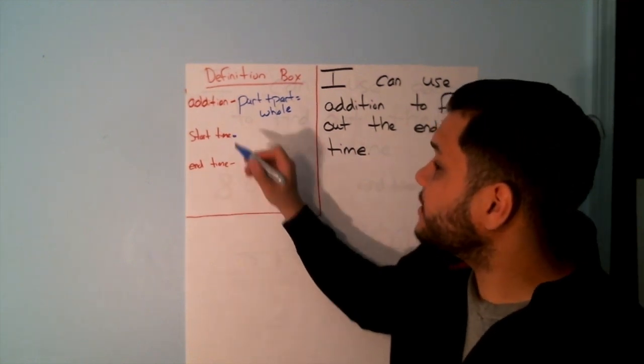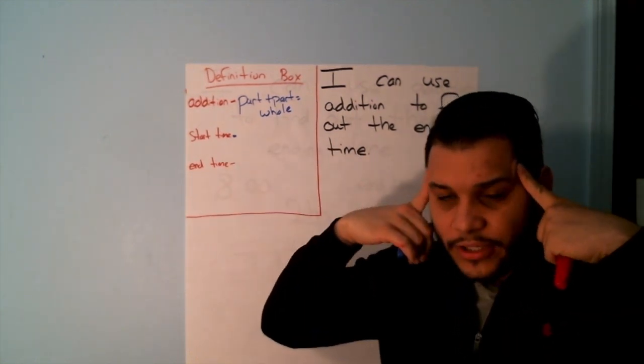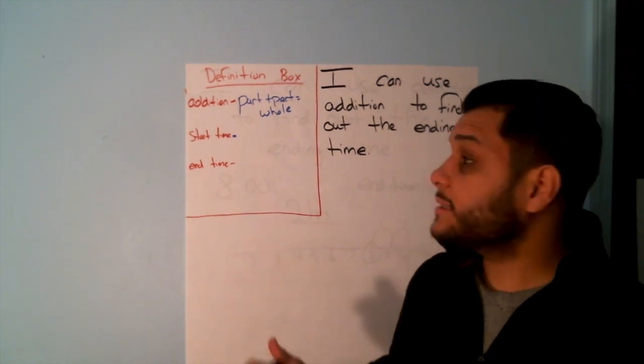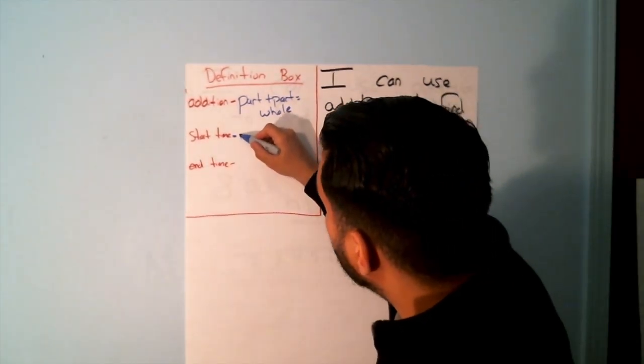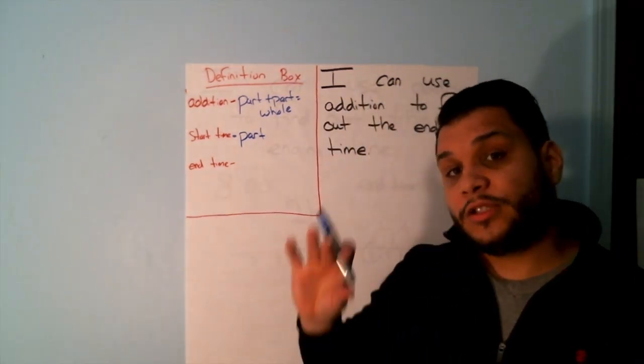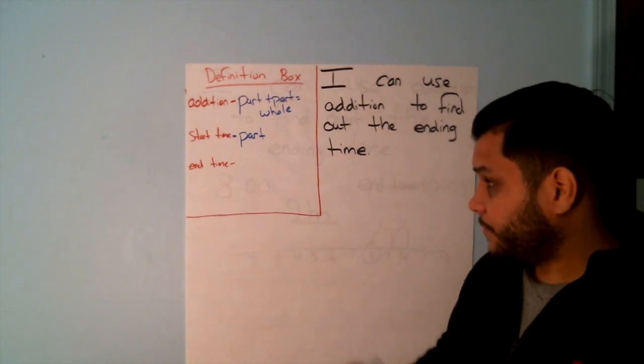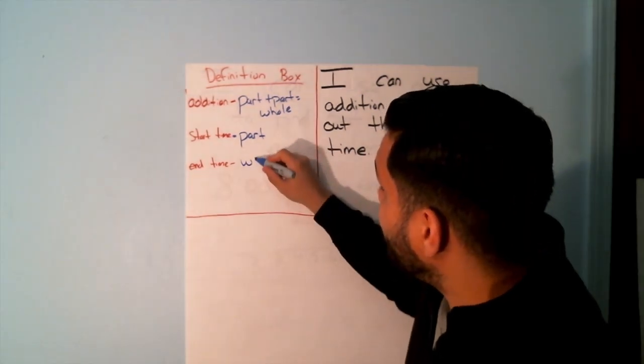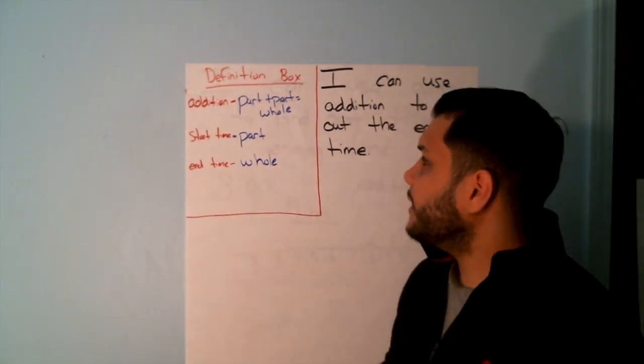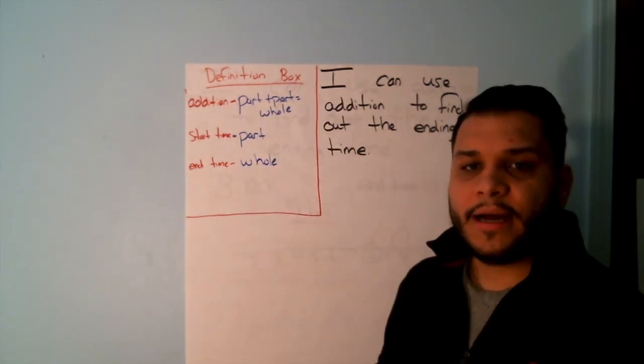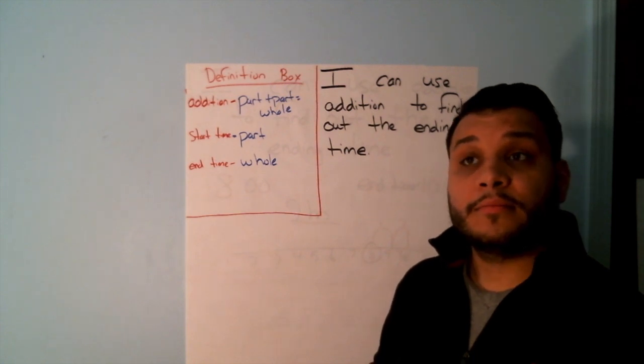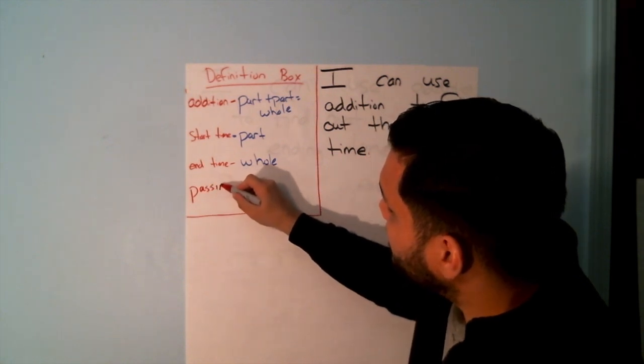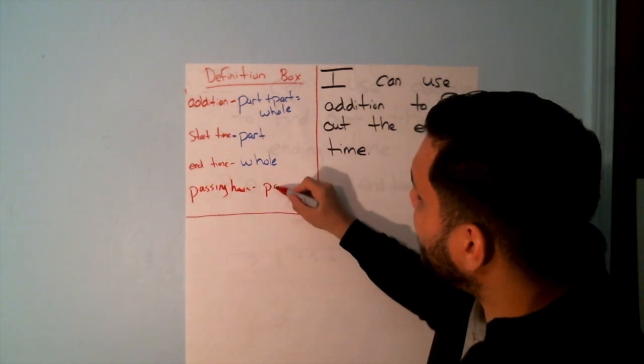So what would I say my start time is? If I'm thinking about addition, would I say that my start time is my part or that my start time is my whole? Yes. My start time is part. It's one of the parts of the equation that I'm going to do. What is my end time then? Awesome. My end time is what we will call the whole. Now we have a second part that we haven't identified. What would we call that part? Maybe the passing hours or how many hours have passed. So passing hours, we would say, is our next part.